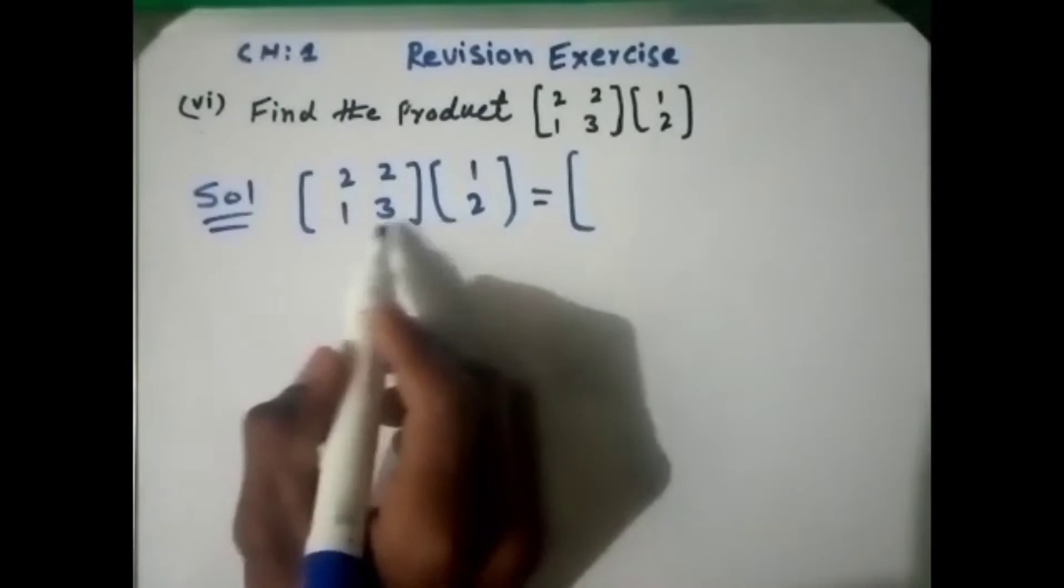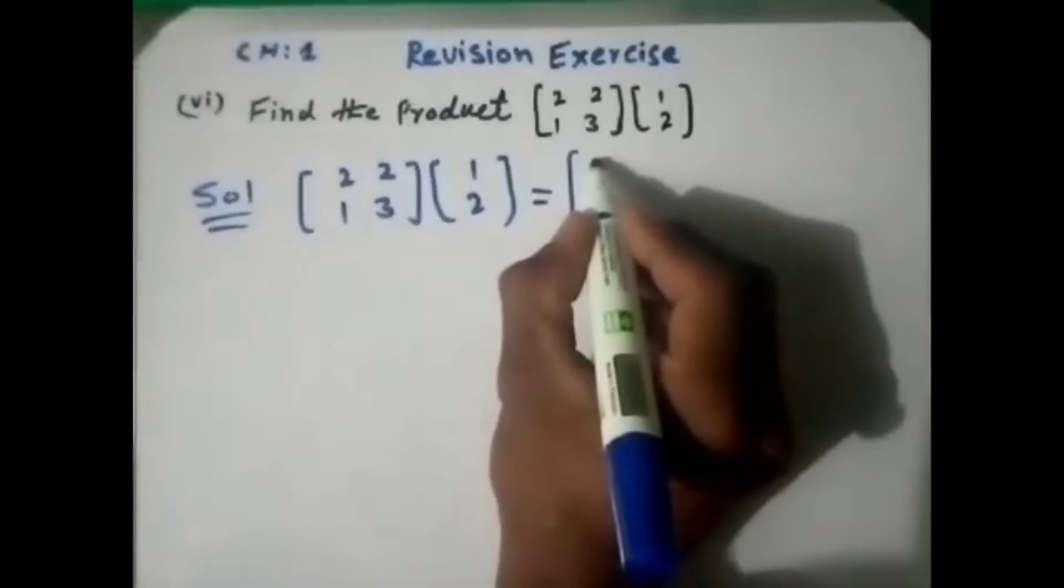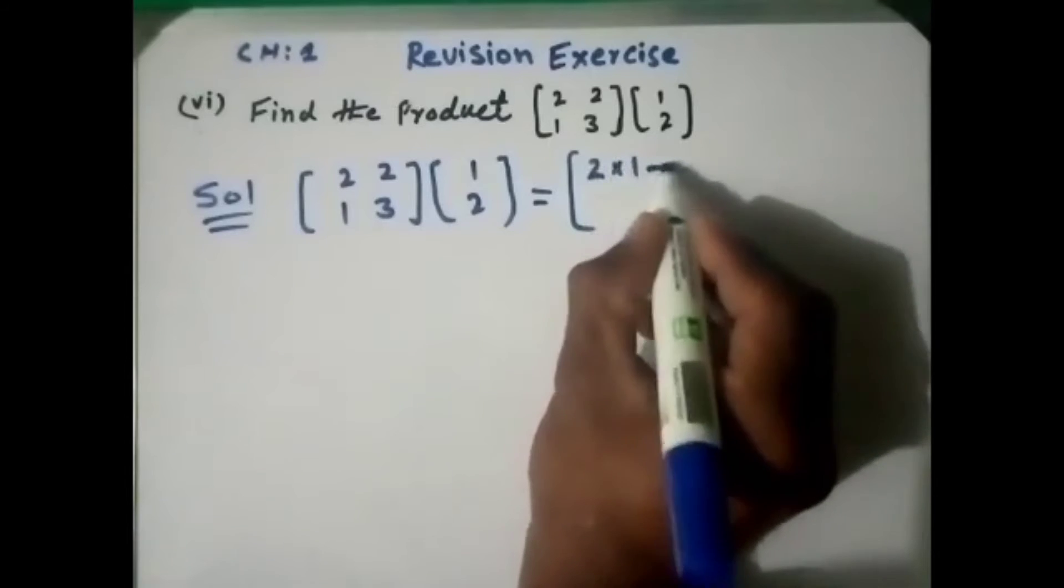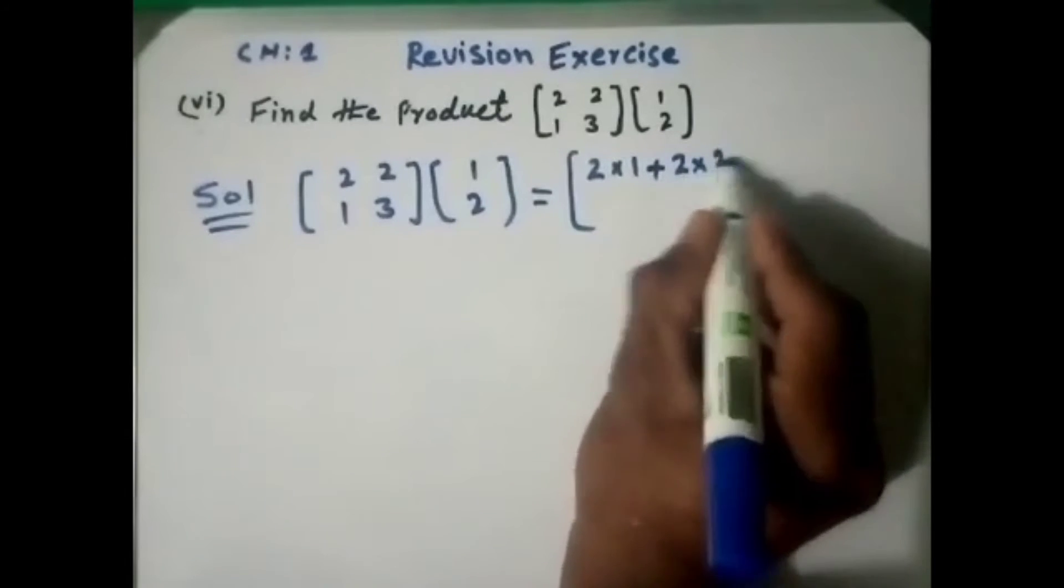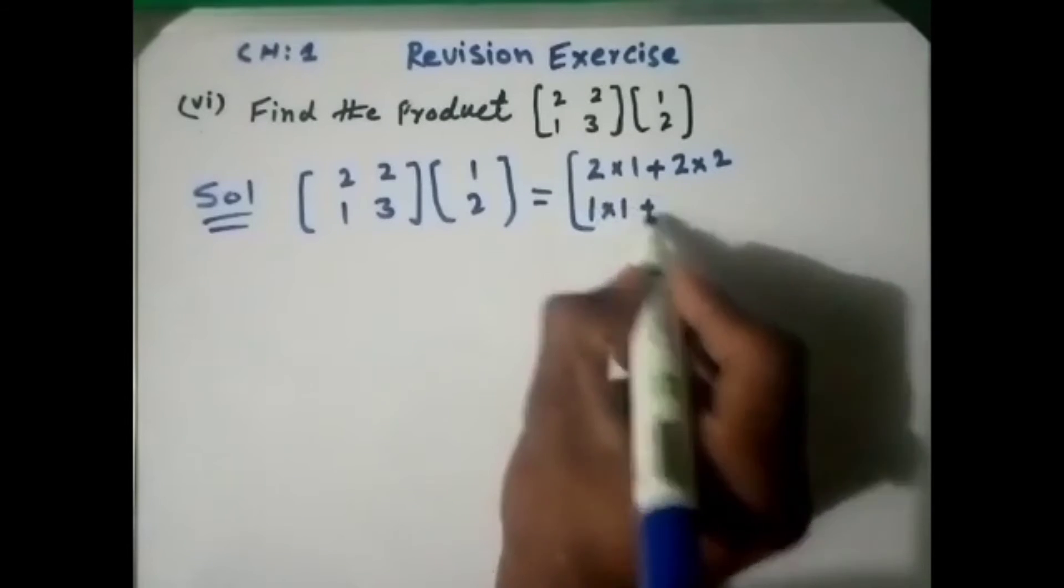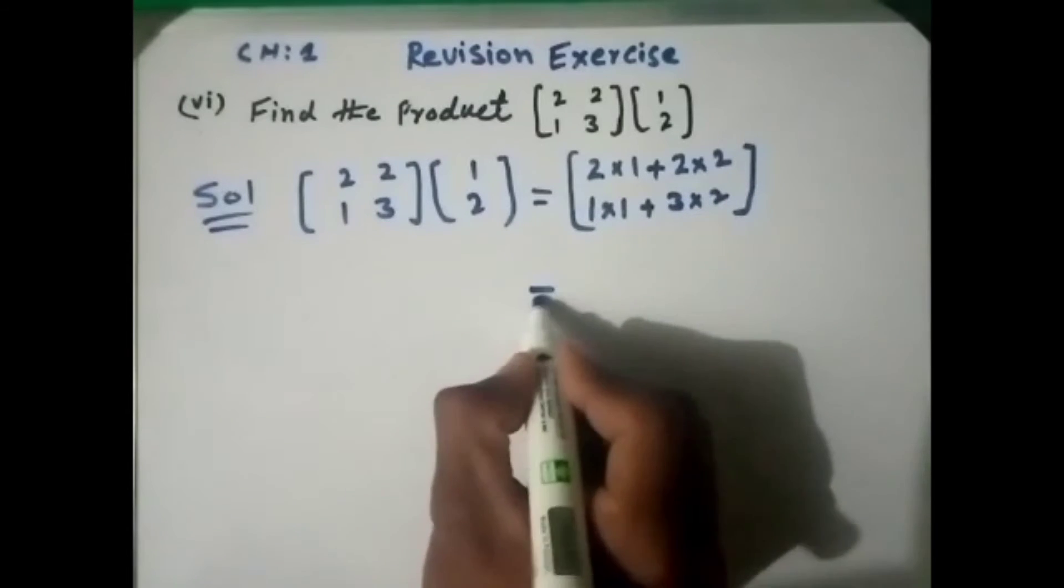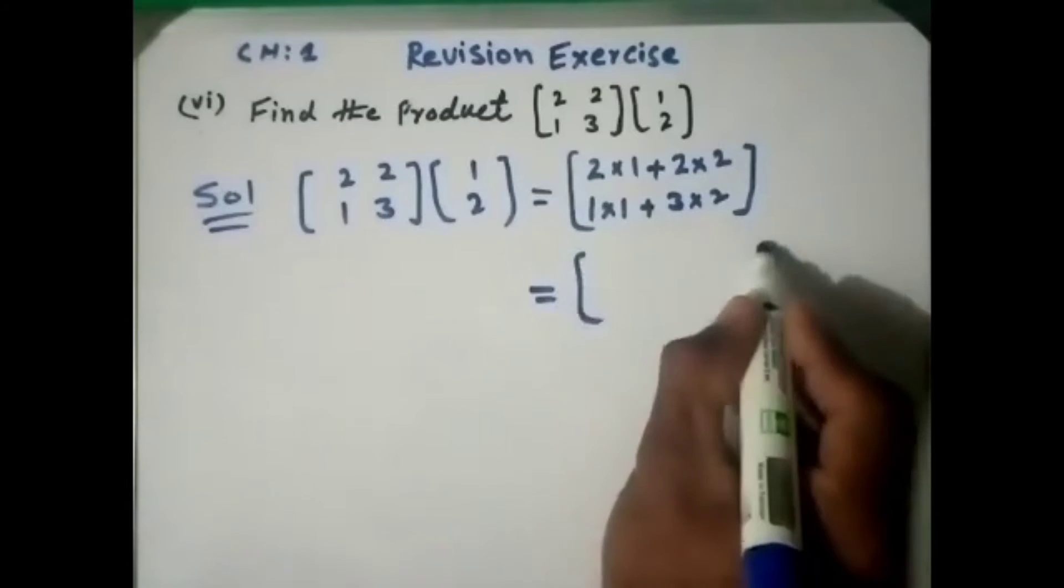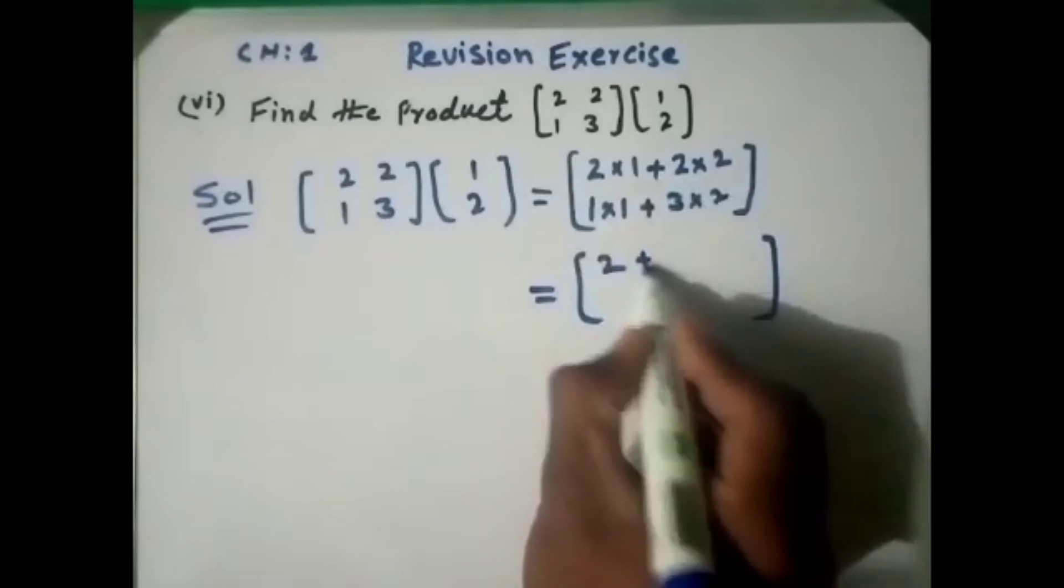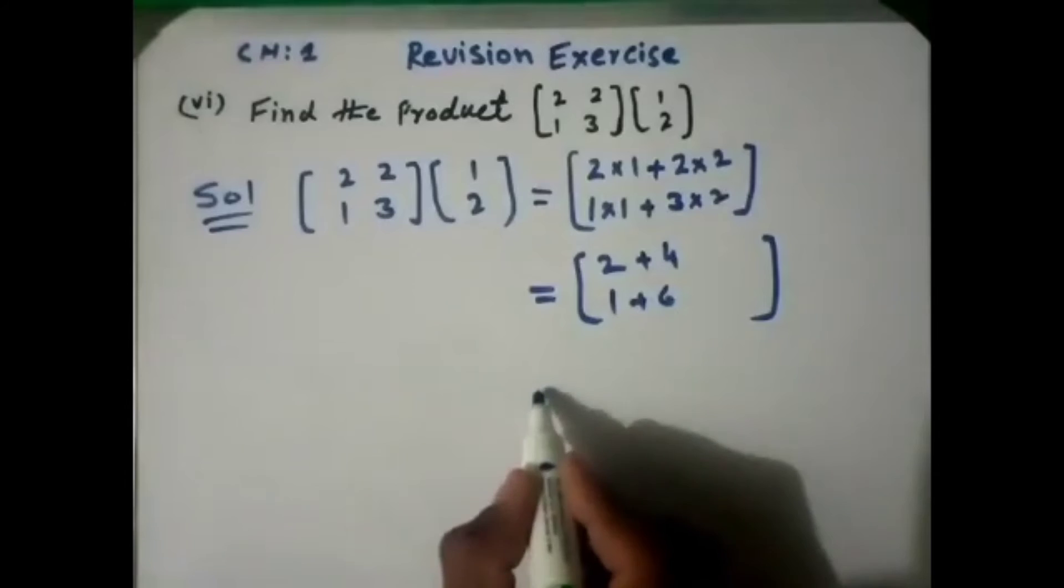For the second row, first column: 2 multiply by 1 plus 2 multiply by 2. Then 1 multiply by 1 plus 3 multiply by 2. We simplify this relation: 2 plus 4, and 1 plus 6, that is...